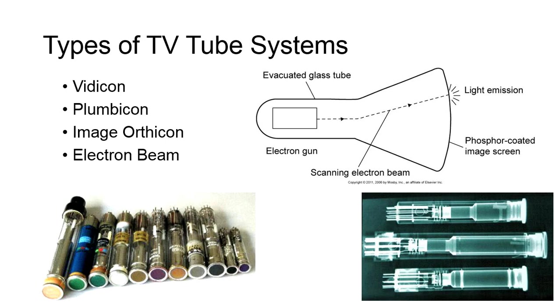Light falls on the photocathode and gets converted to electrons. Then a tube potential and voltage accelerates the electrons toward a target anode. An electron gun scans the back of the target to produce an image of 525 lines of thousands of dots. The scan rate is 30 frames per second, and each scan is considered a frame.